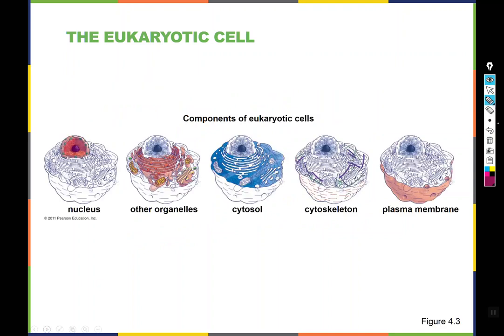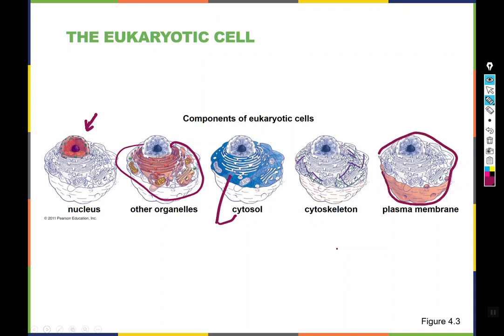Eukaryotic cells have many components. The nucleus is usually the largest organelle — it's a membrane-enclosed ball with a denser region in the center. The other organelles are primarily made of membranes folded into particular configurations, so it's a bunch of membranes inside of a big membrane. The cytosol is all the material between all those membranes. The cytoskeleton functions to anchor organelles in their place, give the cell its overall shape, and provide structural support. The plasma membrane is what keeps the cell separate from its environment.